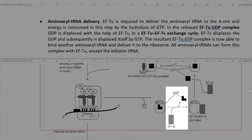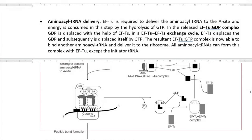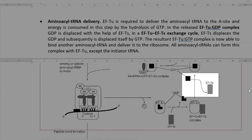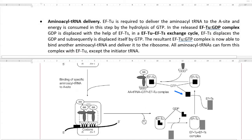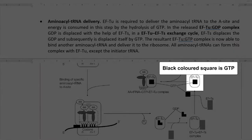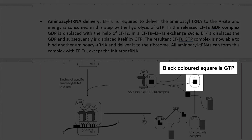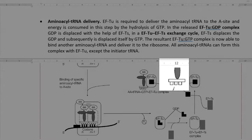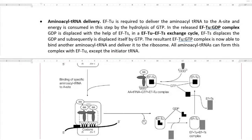Thus, EF-TS first displaces the GDP and subsequently EF-TS itself gets displaced on addition of GTP. Again, the EF-TU-GTP complex is formed, which is now available to bind to another aminoacyl tRNA molecule and deliver it to the ribosome. All aminoacyl tRNA molecules can form this kind of complex with EF-TU except the initiator tRNA molecule.